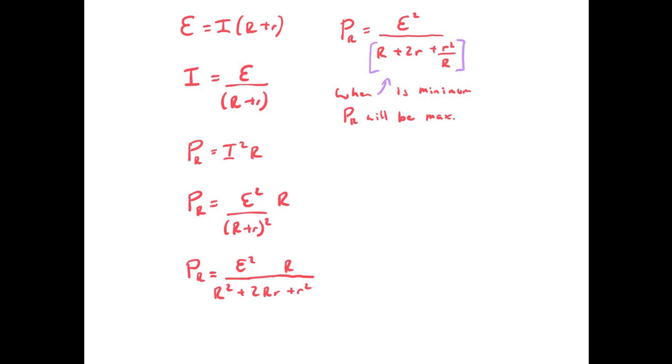Now when everything on the bottom there is a minimum, our power output will actually be a maximum. So when I've got a minimum, how can I find out when that minimum value is? What I'm going to do is, if I differentiate this equation and set it to 0, that will tell me when I've got my minimum.